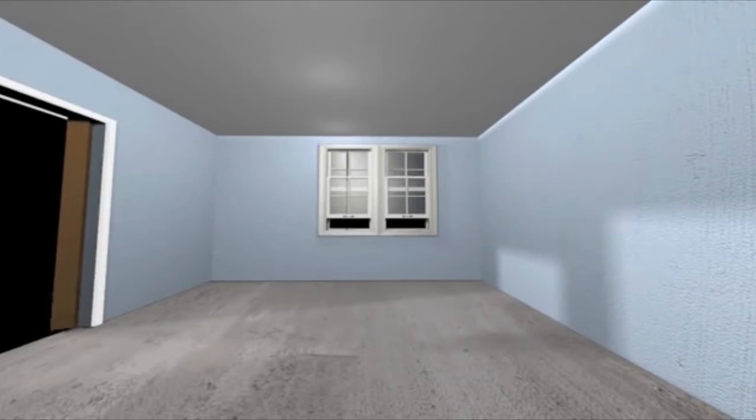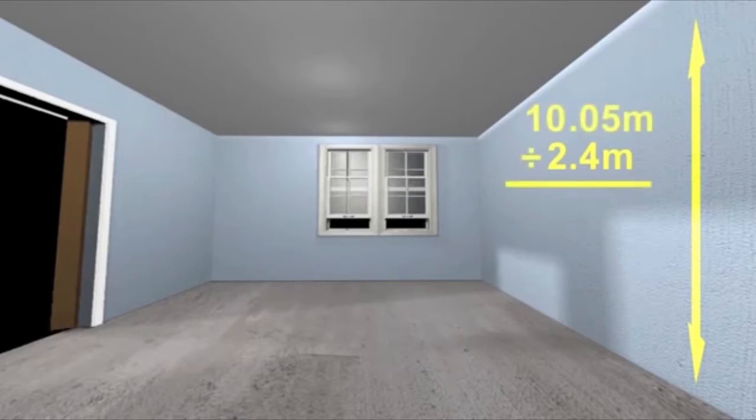Now measure your ceiling height. Most modern houses are 2.4 metres, but it is worth just checking. Divide the roll length, 10.05 metres standard roll, by the height of your wall to find out how many drops each roll will give you.